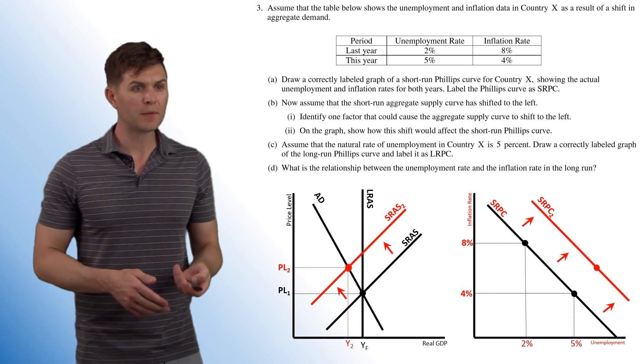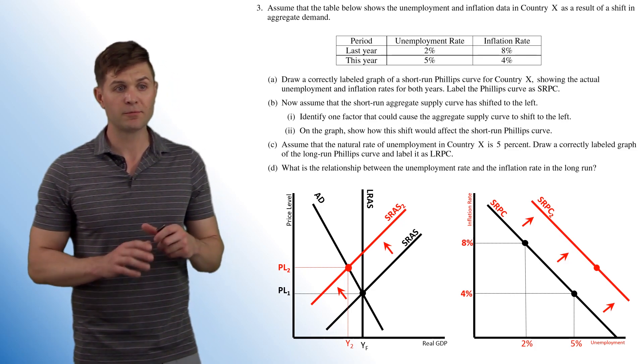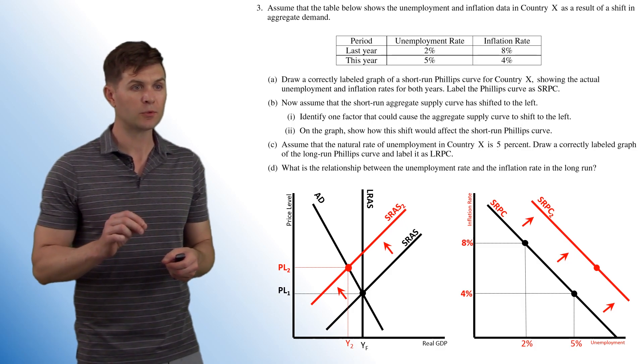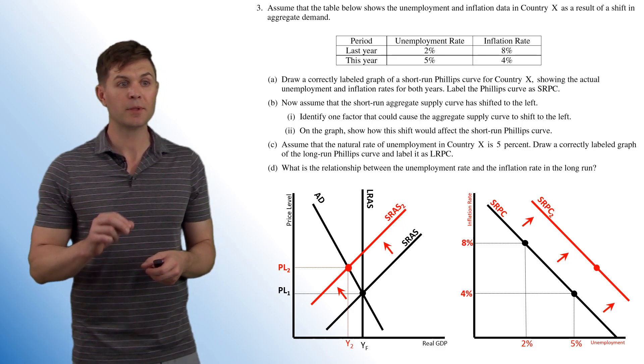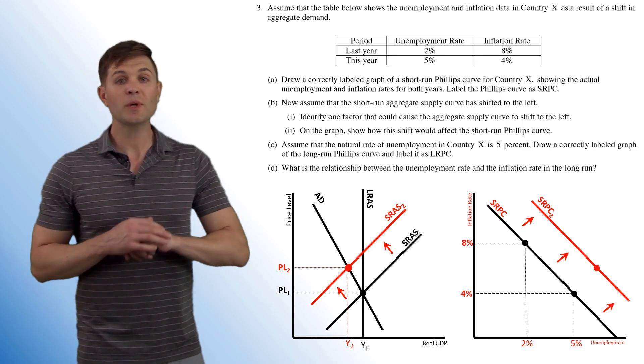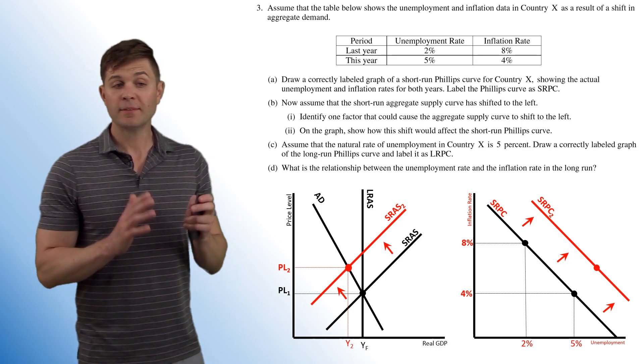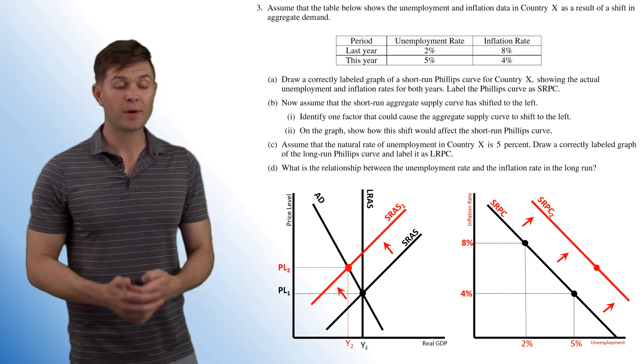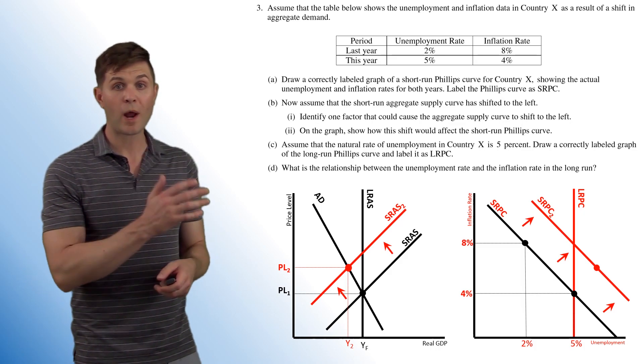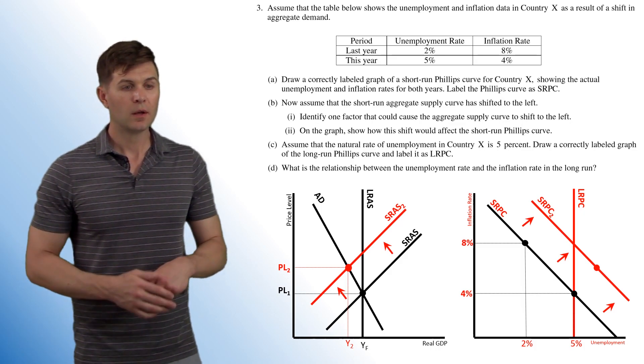Now part C says assume that the natural rate of unemployment in country X is 5%, draw a correctly labeled graph of the long run Phillips curve and label it as LRPC. So we can just add this right on here and it's at 5% natural rate of unemployment. Unemployment is 5% so our LRPC is going to be right at 5%. Nice and simple.